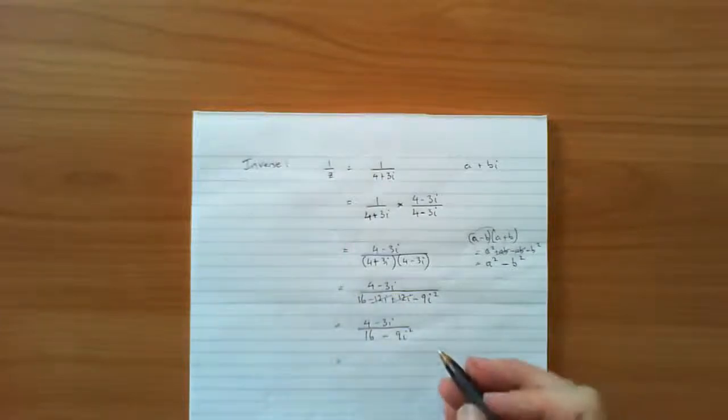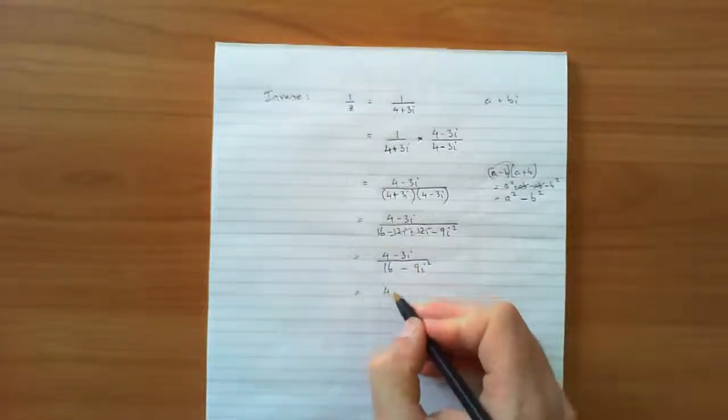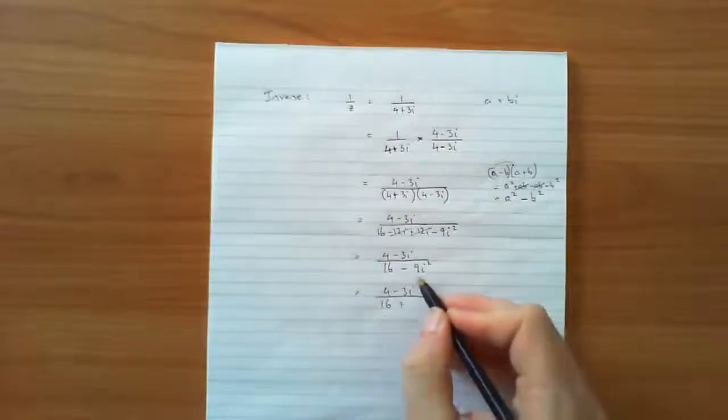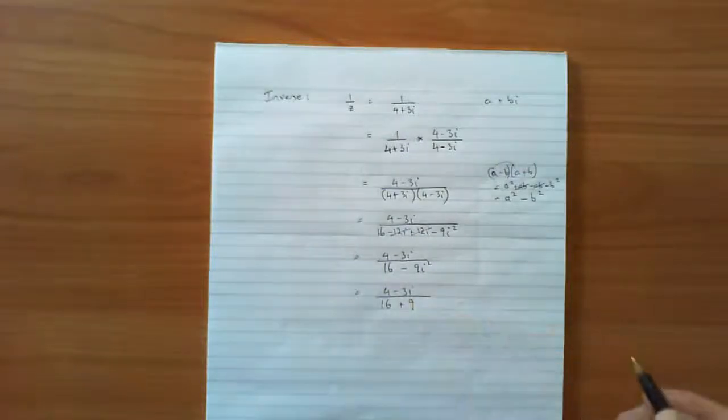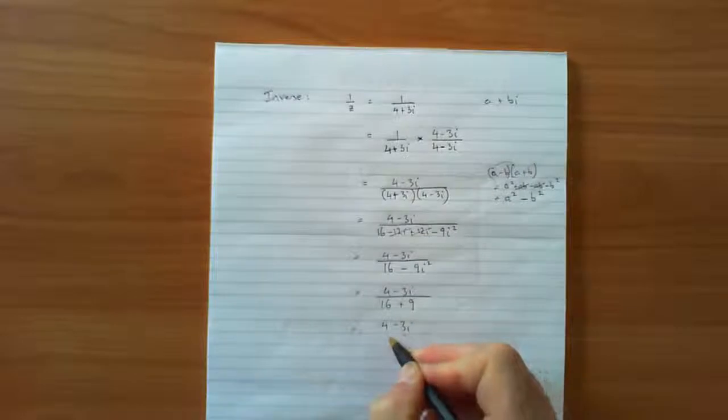But we can take this one step further with complex numbers because we know that i squared is negative 1. So the top stays the same. The bottom becomes 16 plus, now, because 9 times negative 1, negative 9 times negative 1 is going to be a positive 9. That gives us 4 minus 3i over 25.